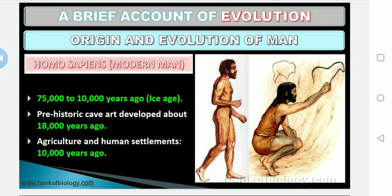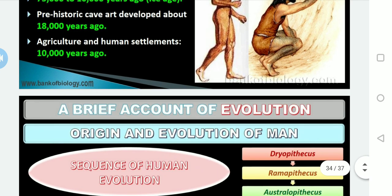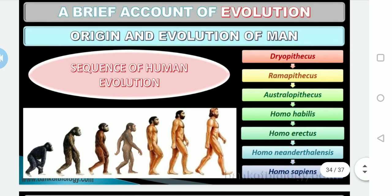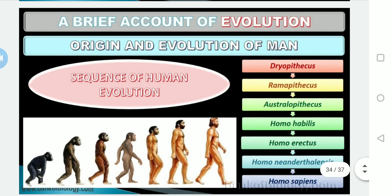Remember the sequence of human evolution: Dryopithecus, Ramapithecus, Australopithecus, Homo habilis, Homo erectus, Homo neanderthalensis, then Cro-Magnon, and finally the modern man Homo sapiens. This is the complete sequence of human evolution — we can identify it briefly.